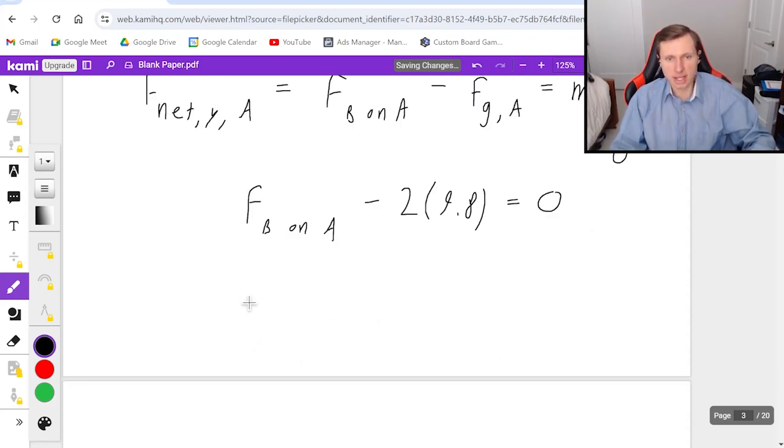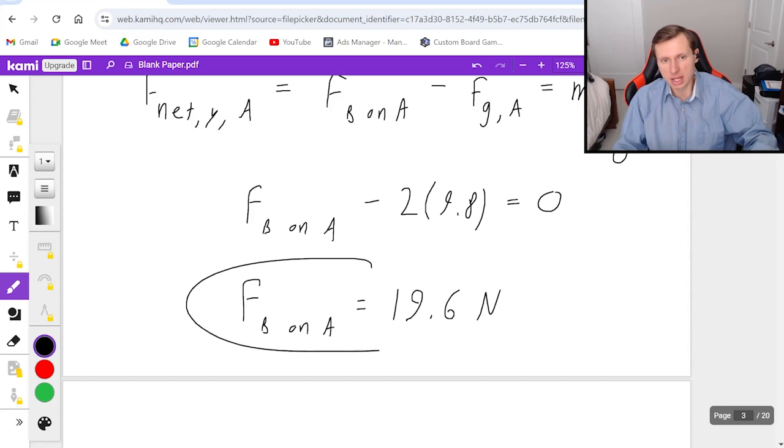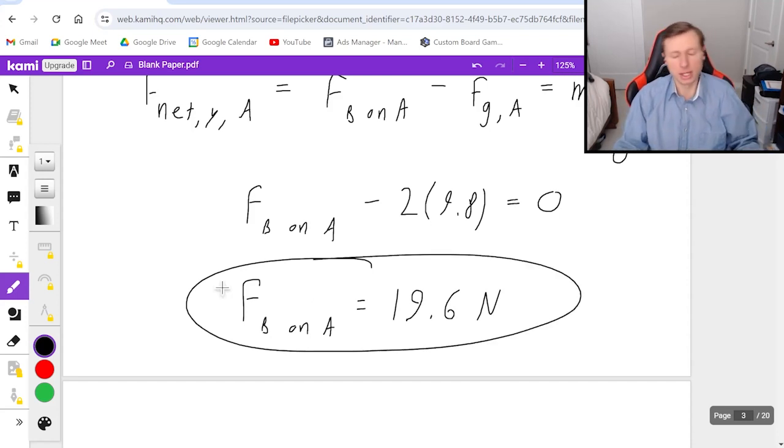So then if I have my calculator, I can easily solve this. 2 times 9.8. The answer is 19.6 newtons. That is the force of a on b or b on a. They're the same force. That part's done.